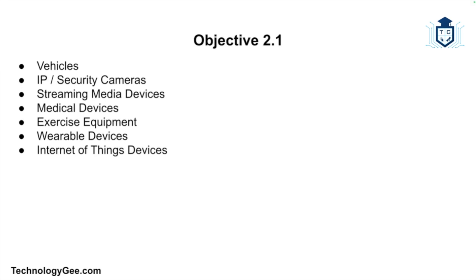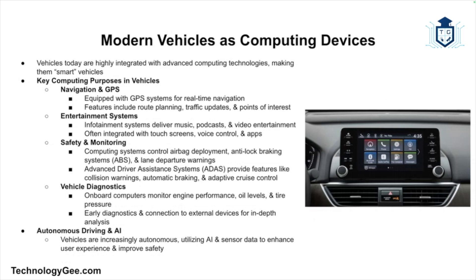Let's start with vehicles. Modern vehicles are highly sophisticated computing devices. Advanced technology has transformed cars, trucks, and other transportation systems into smart vehicles with multiple computing purposes, such as offering navigation and GPS. Most vehicles today come equipped with GPS systems for navigation, offering route planning, traffic updates, and points of interest. They also offer entertainment systems — infotainment systems provide music, podcasts, and video entertainment through touch screens that often support voice control and app integration.